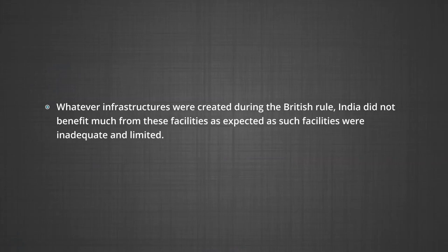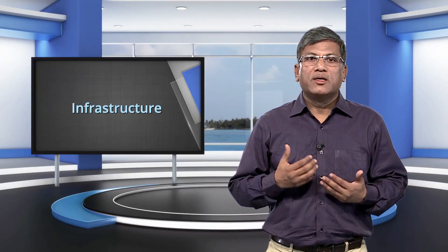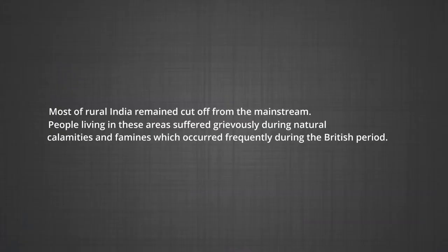Number four: whatever infrastructure was created during the British rule, India did not benefit much from these facilities as expected, as such facilities were inadequate and limited. There always remained an acute shortage of all-weather roads to reach rural areas, particularly during the rainy season. Most of rural India remained cut off from the mainstream. Consequently, people living in these areas suffered grievously during natural calamities and famines, which occurred frequently during the British period. The social benefits gained from the introduction of railways were thus outweighed by the country's huge economic loss.